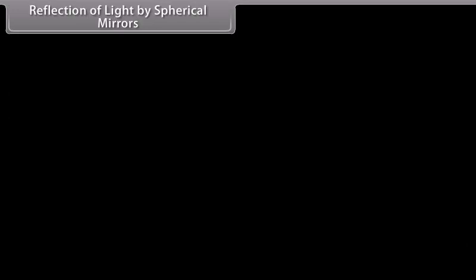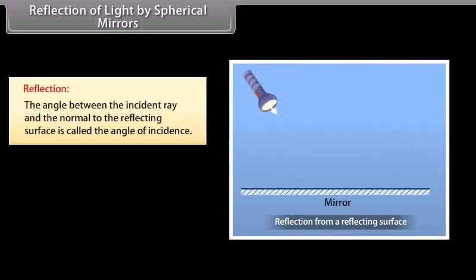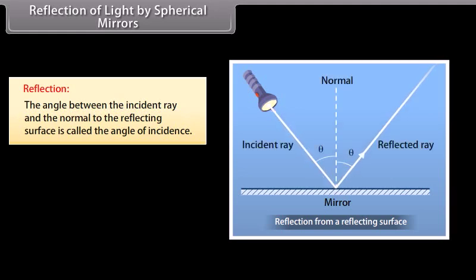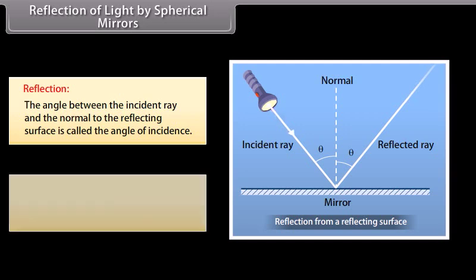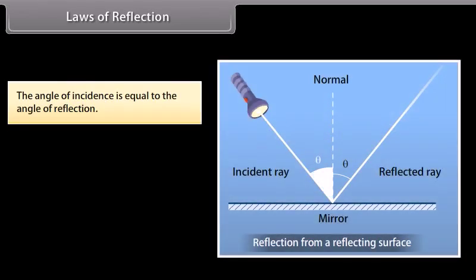Reflection of light by spherical mirrors. The angle between the incident ray and the normal to the reflecting surface is called the angle of incidence. The angle between the reflected ray and the normal to the reflecting surface is called the angle of reflection. The angle of incidence is equal to the angle of reflection.